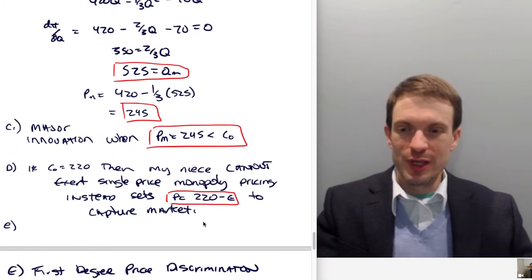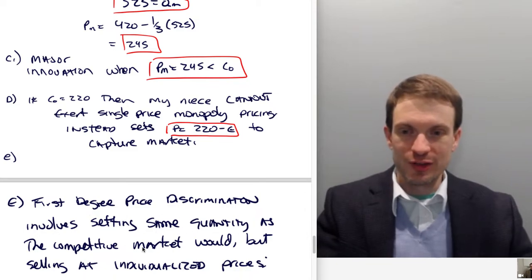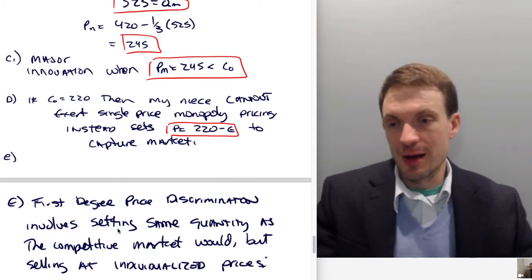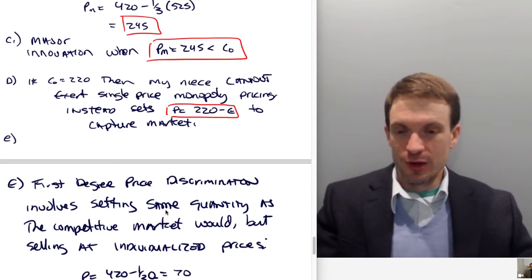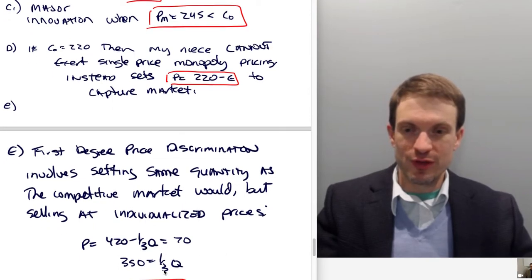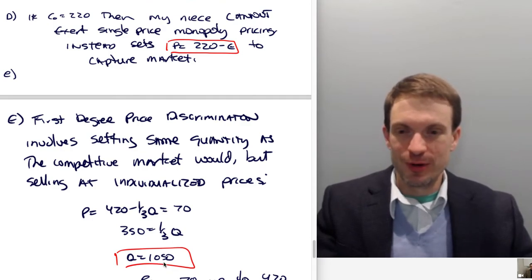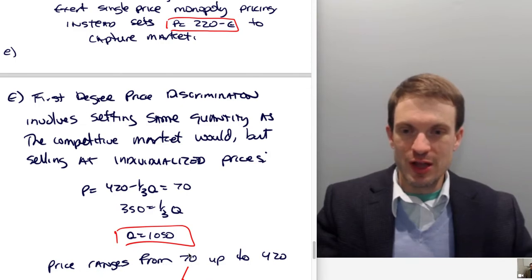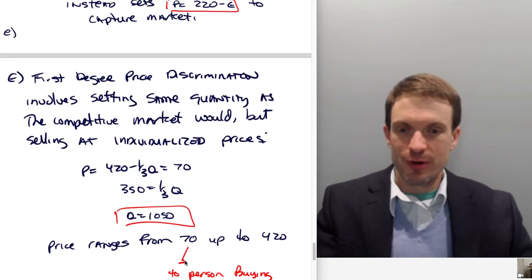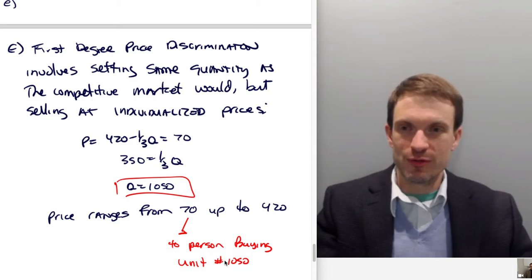What would we get with first-degree price discrimination? This involves setting the same quantity as the competitive market would, but selling at individualized prices. With first-degree price discrimination, everybody gets their own individual price. Suppose she leveraged her knowledge of the neighborhood to give everybody their own price. We find the competitive quantity: 420 - (1/3)Q = 70, or 350 = (1/3)Q, so Q = 1050. What are prices? Prices range from marginal cost of 70 all the way up to 420, which is the maximal willingness to pay. Everybody along that demand curve gets a different price, with 70 being the price for the person buying unit 1050.